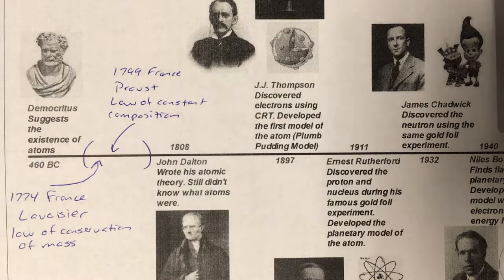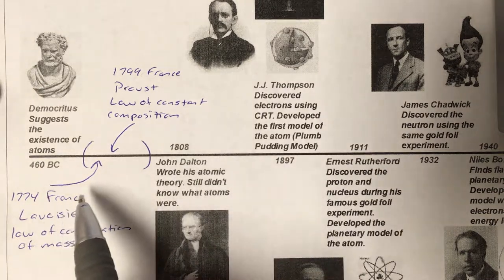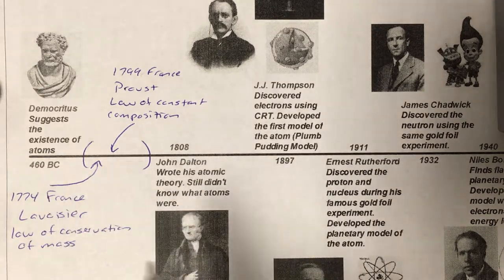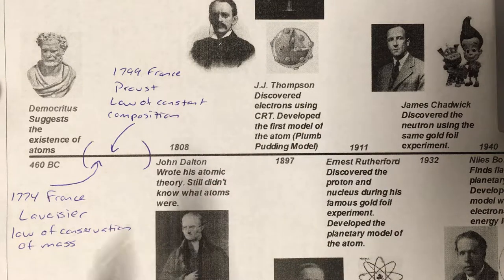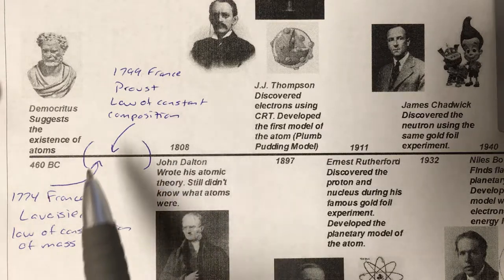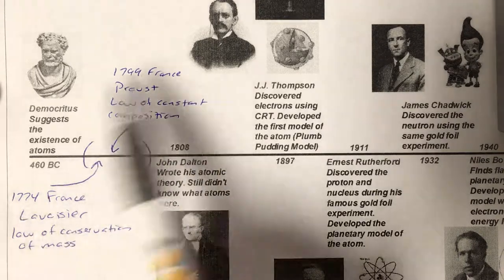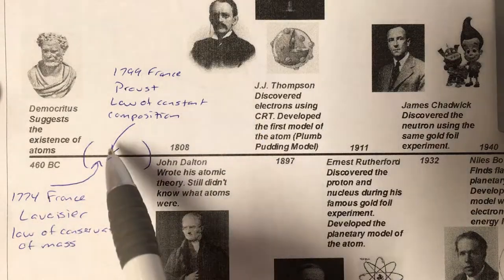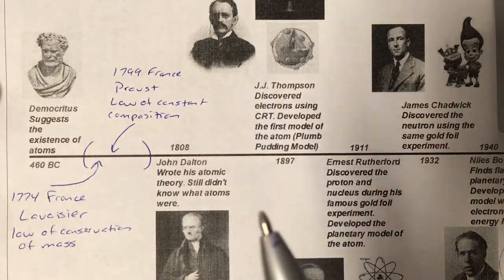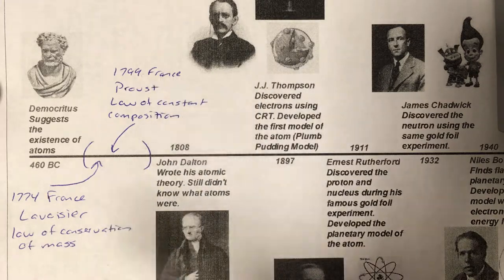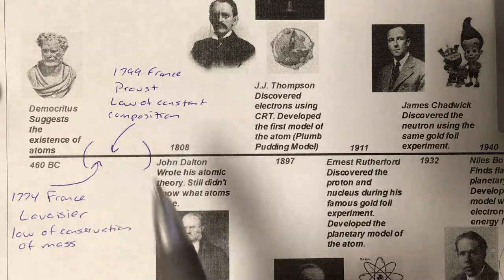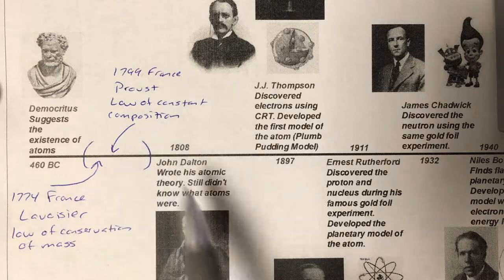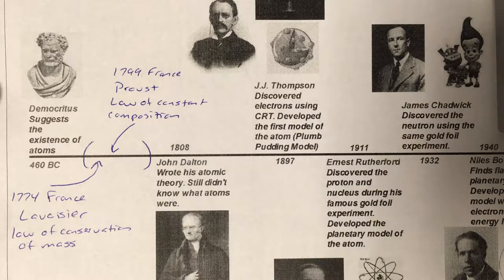Both Lavoisier and Proust worked in France, and here's an interesting cross-curricular thing: notice we go from France to England with Dalton, Thompson, and Rutherford. The switch was caused by the French Revolution. When these scientists were doing their work, they were funded by the French monarchy. When the revolution happened, they ended up in jail — some lost their heads. That was the end of the French contribution, as people were more worried about survival than science. So development moved into England.